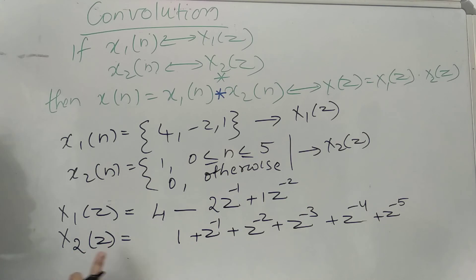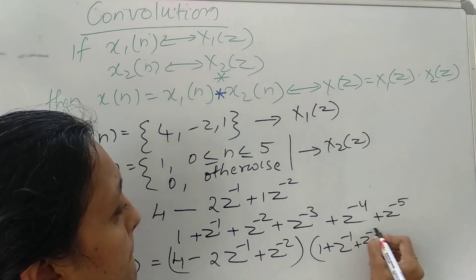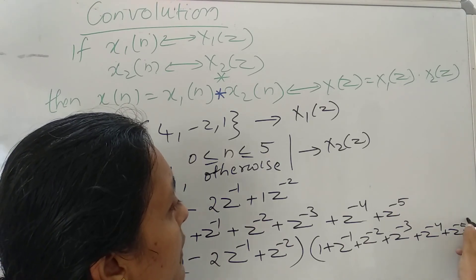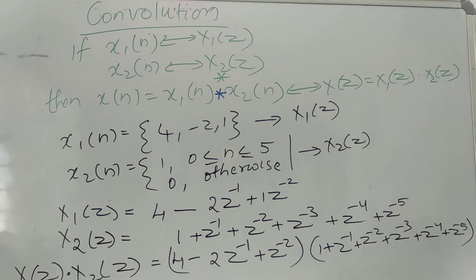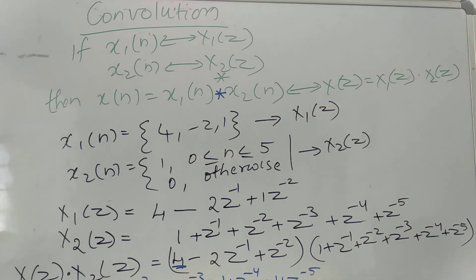So we have X1(Z) and X2(Z), and according to the convolution property we take the product X1(Z) into X2(Z). Starting with 4: 4 into 1 gives 4, then 4 into Z raised to minus 1, then 4Z raised to minus 2, 4Z raised to minus 3, 4Z raised to minus 4, and 4Z raised to minus 5. Similarly, we compute the other terms.